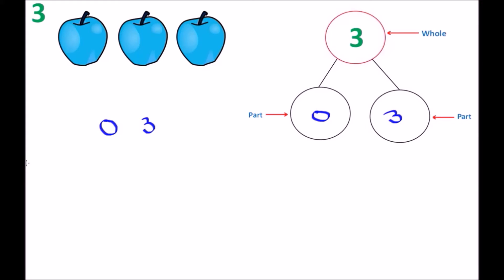Now we take a look again at our three apples, and what other numbers can we make with the three apples? Let me put a check mark to the first apple. So we know we have a one, so let's write down a number one, and then I'll put a check mark for the next one — that's the two — and the next one, that's the three. So we have two apples remaining. We have a one that goes on the left side of the number bond and a two that goes on the right side.